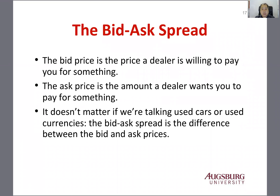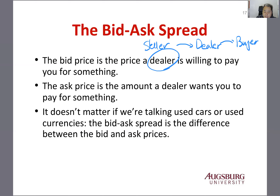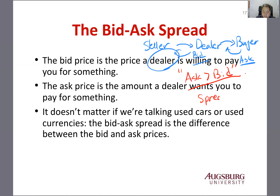The next topic is the bid-ask spread. The bid price and ask price exist because the foreign exchange market is a dealer's market. There's a dealer between buyer and seller — the seller sells to the dealer and the dealer sells to the buyer. The dealer receives the bid price and the buyer pays the ask price. So the ask price is usually higher than the bid price, and that spread is the compensation for the dealer.